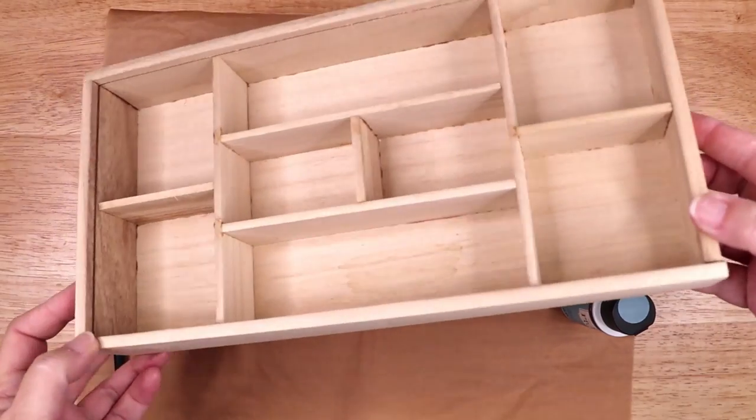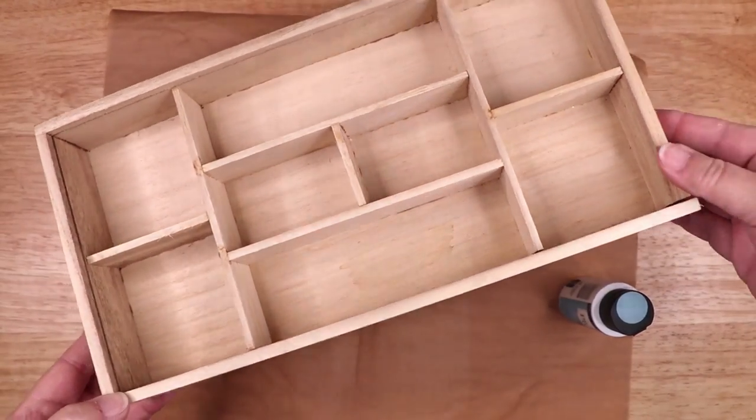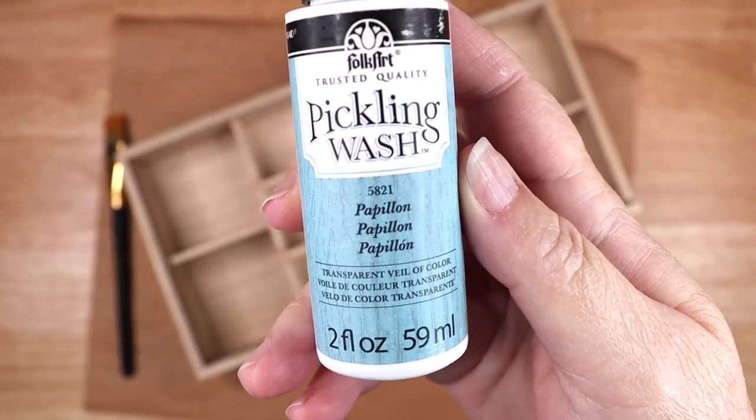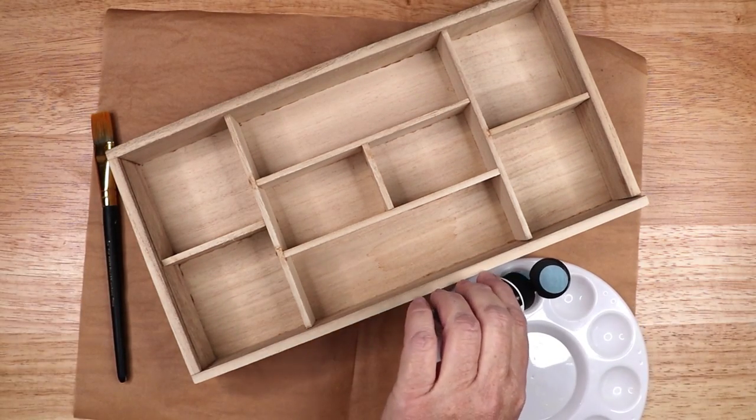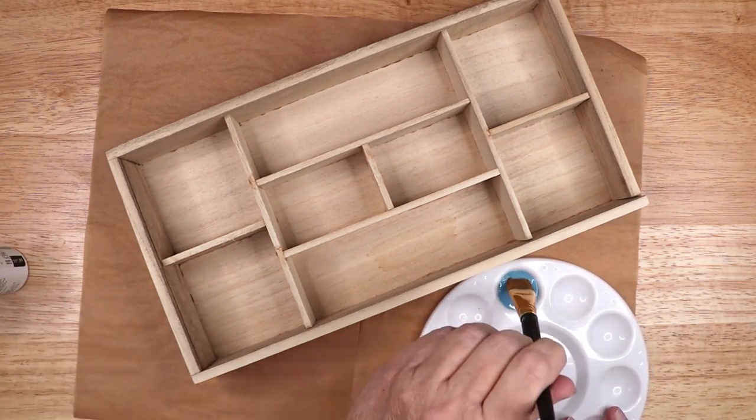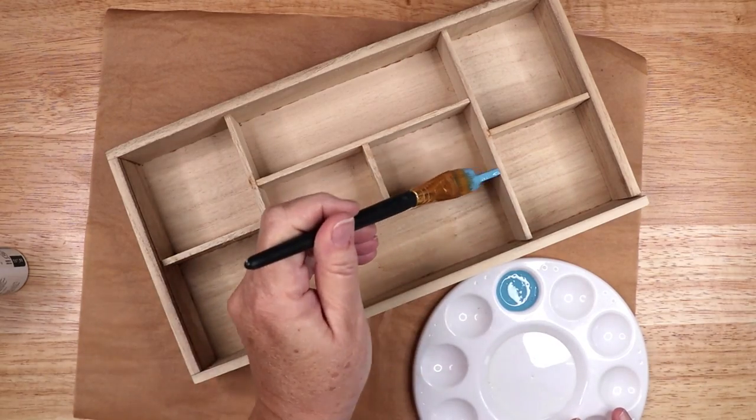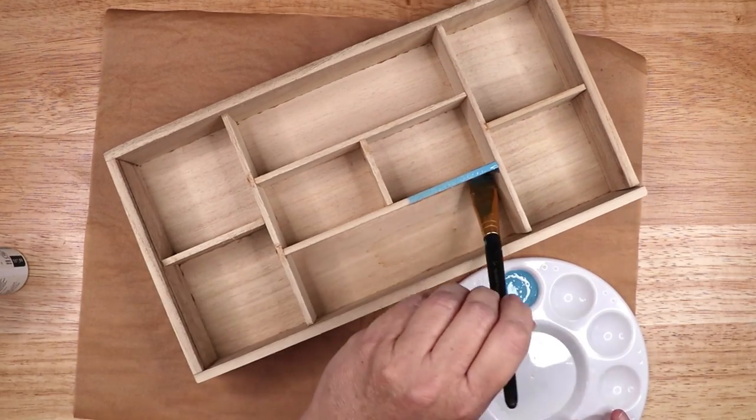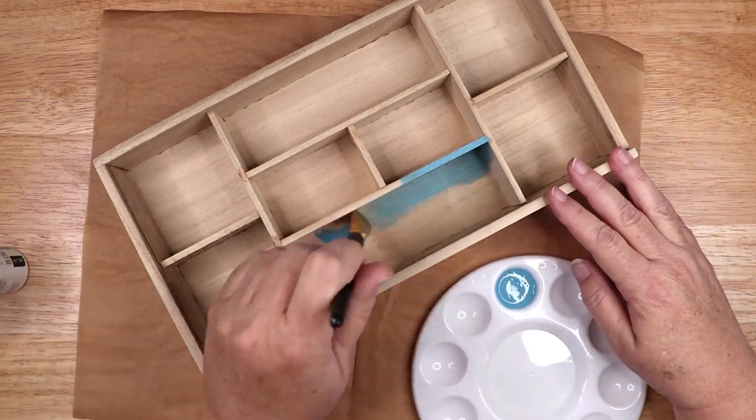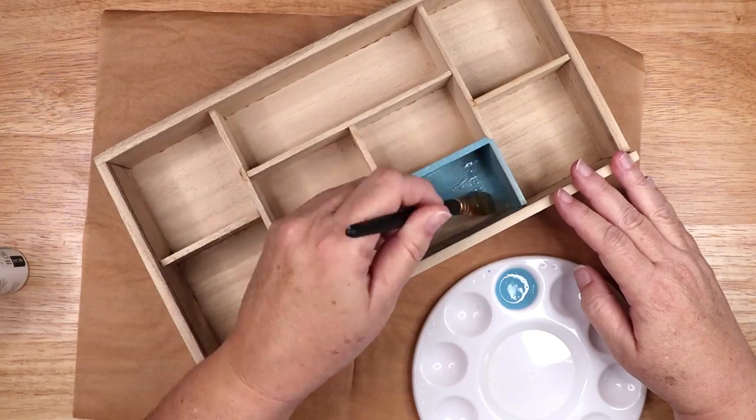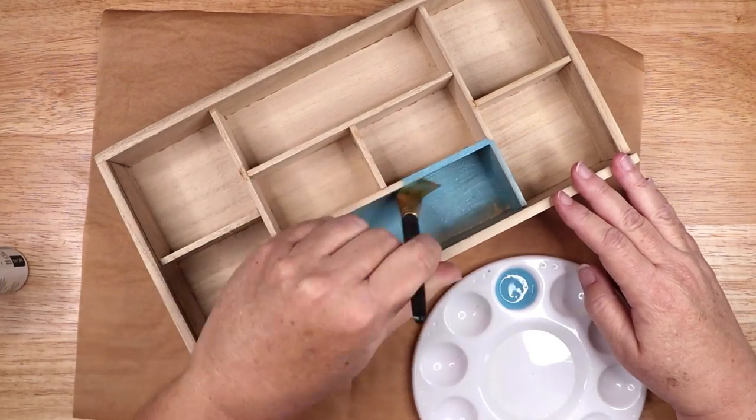I am beginning with this unfinished wooden shadow box or memory box, and I will link to all of the materials I used in the description below. It used to have an acrylic covering that slid into the track inside the front, but I have removed and discarded that. I have protected my surface with a piece of parchment baking paper and I am painting my box with a blue wooden stain called a pickling wash.